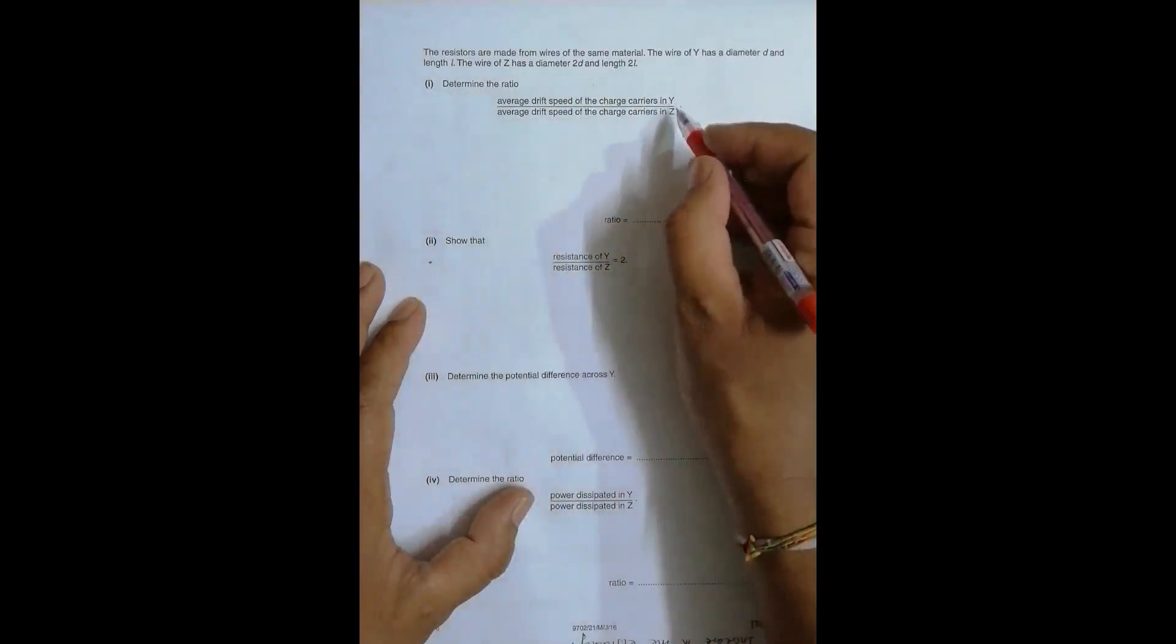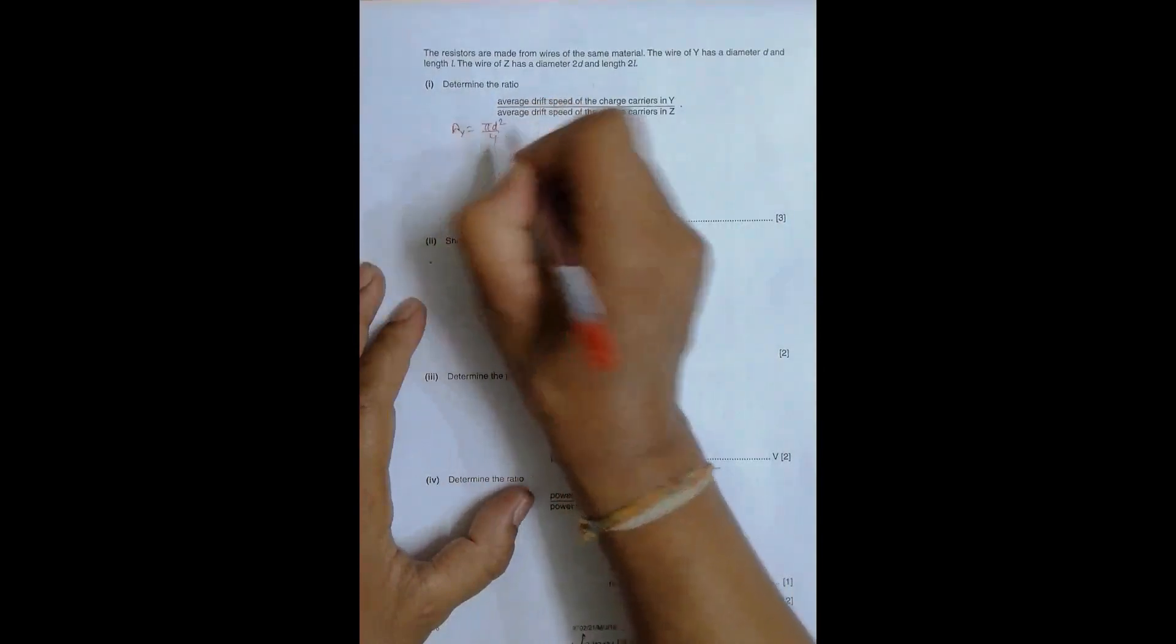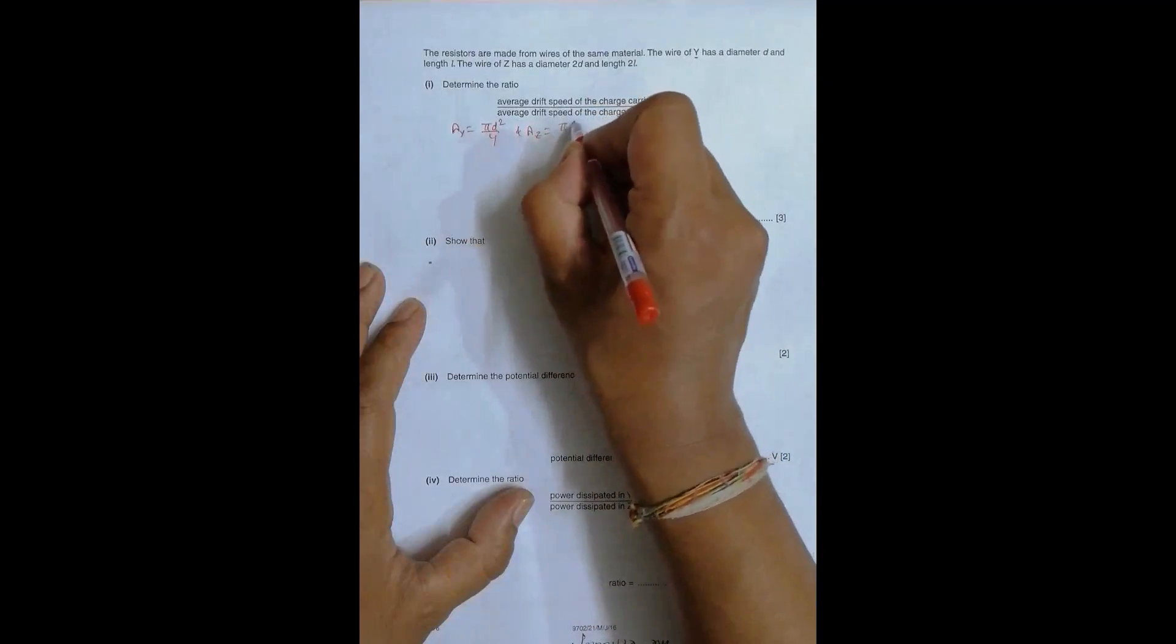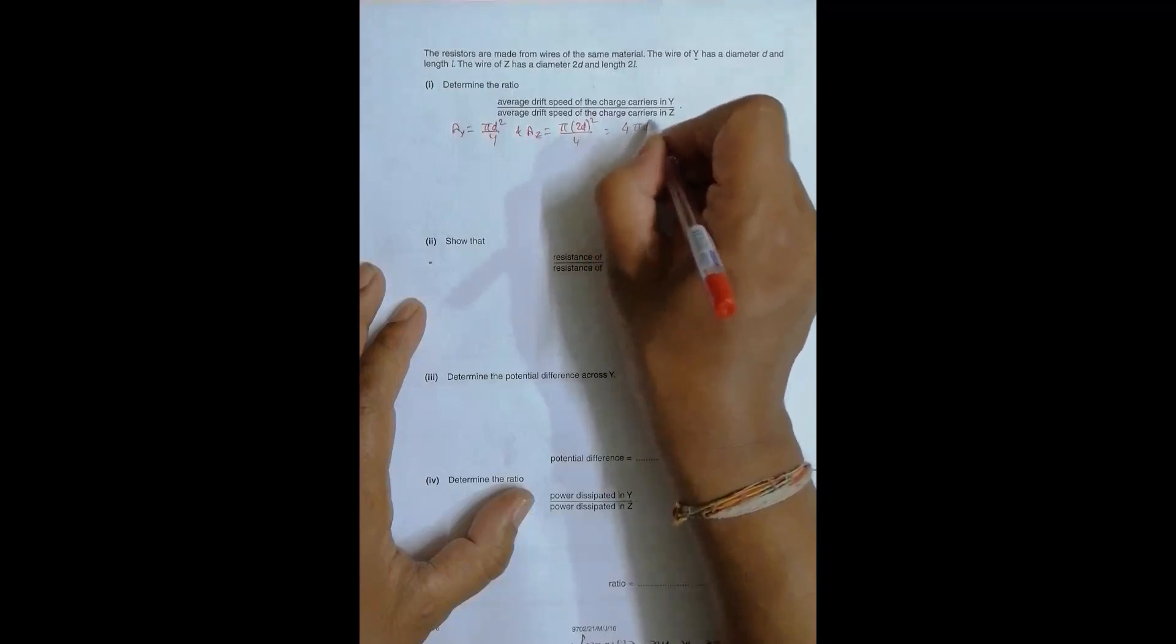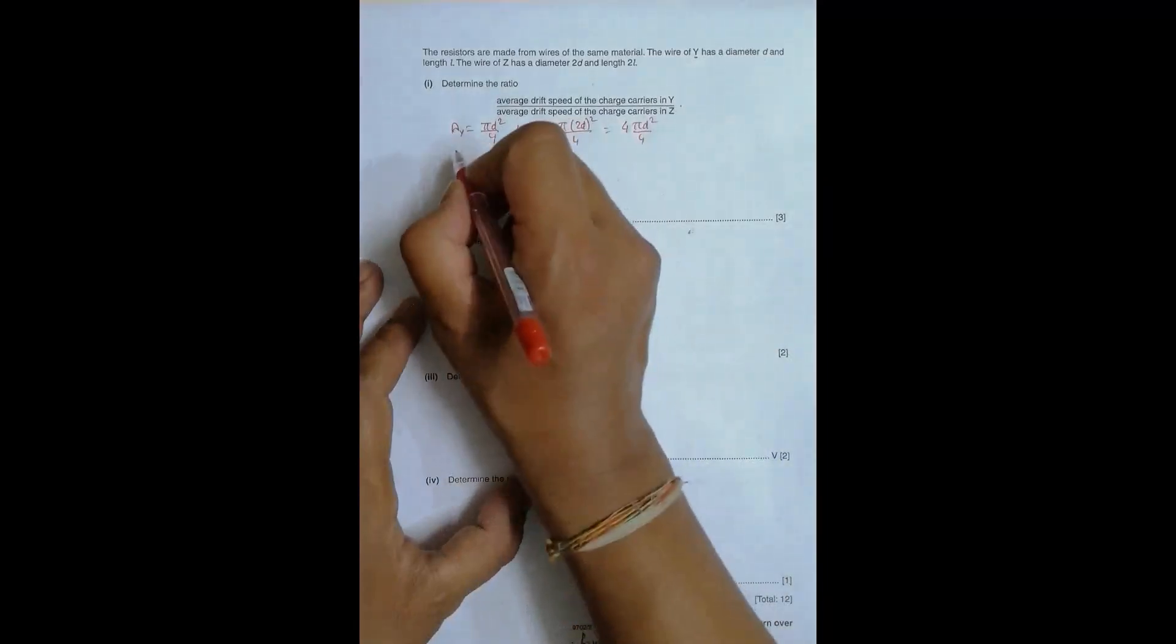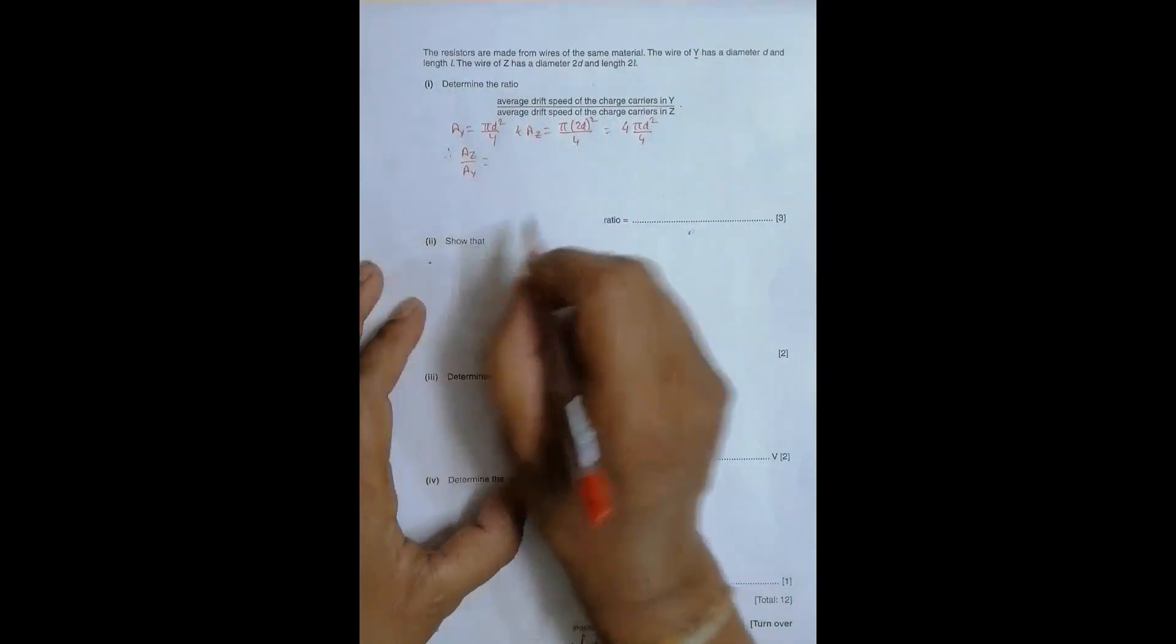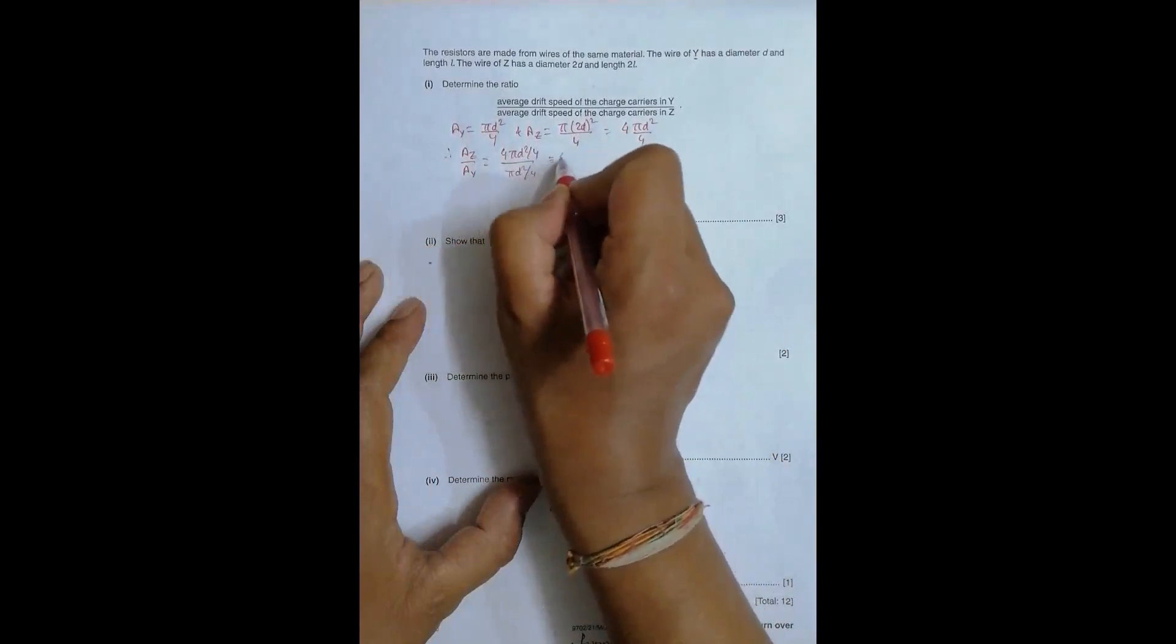So for this thing, let us first compare their cross sections. So A_Y should be equal to pi D squared by 4. So the cross section of Y should be equal to pi D squared by 4. And A_Z should be equal to pi 2D whole squared by 4. That's equal to 4 times pi D squared by 4. So this gives us the ratio of A_Z by A_Y should be equal to 4 pi D squared by 4 divided by pi D squared by 4 equal to 4. So I first found the ratio of A_Z to A_Y.